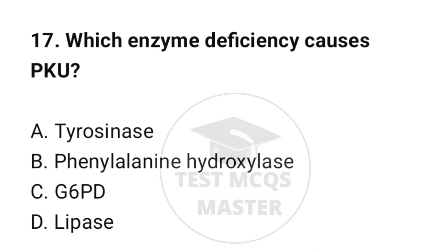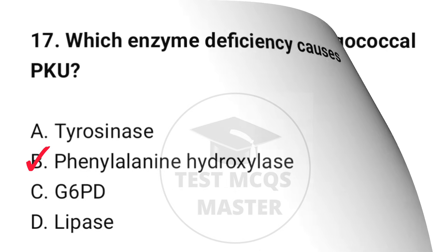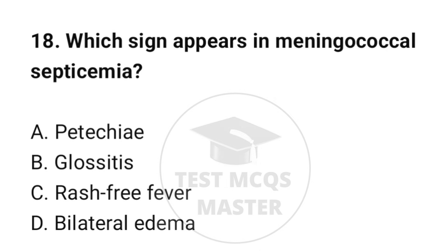Question number 17: Which enzyme deficiency causes PKU? The correct option is B: Phenylalanine hydroxylase. Question number 18: Which sign appears in meningococcal septicemia? The correct option is A: Petechiae.